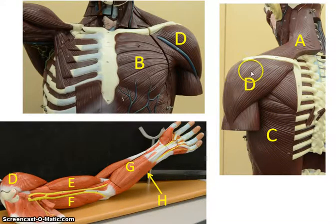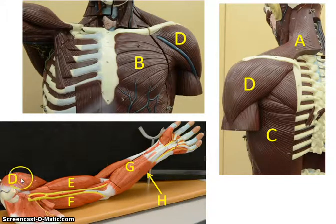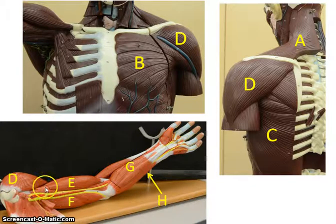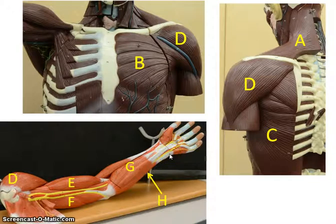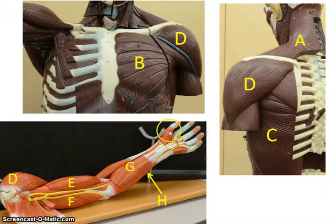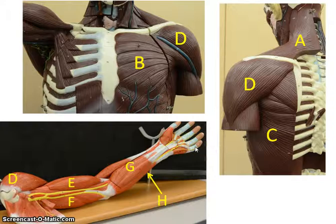Here we have the deltoid — here you can see the posterior, and here you can see the anterior. With the arm model, you need to make sure you orient it correctly. Find the anterior side, the palm side. Then you know the other side is posterior in the anatomical position. Find the thumb side — in the anatomical position, the thumb side is lateral and the little finger side is medial.